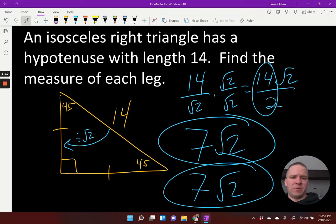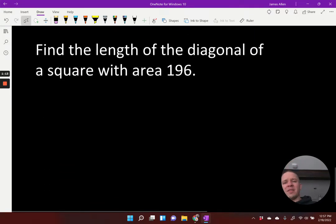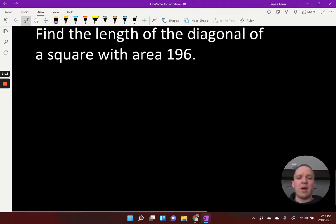How about one more on this one? That was just so quick. Let's do one more. Find the length of the diagonal of a square with area 196. All right,